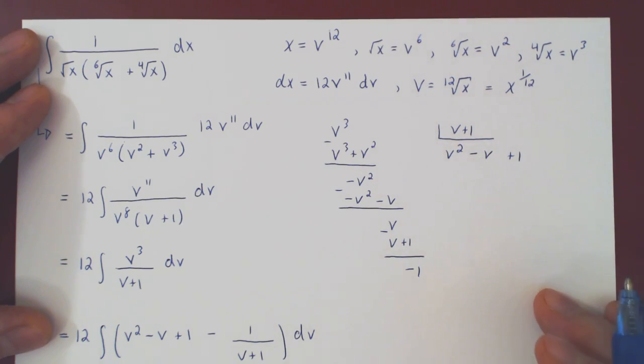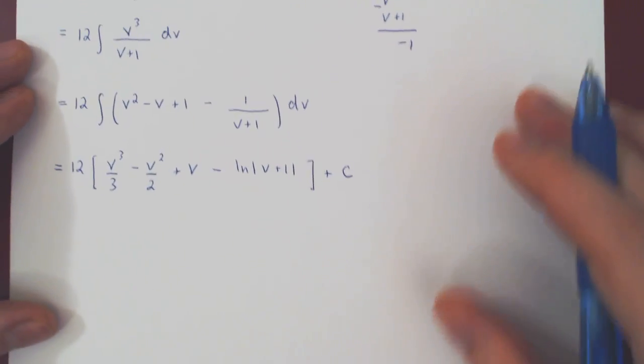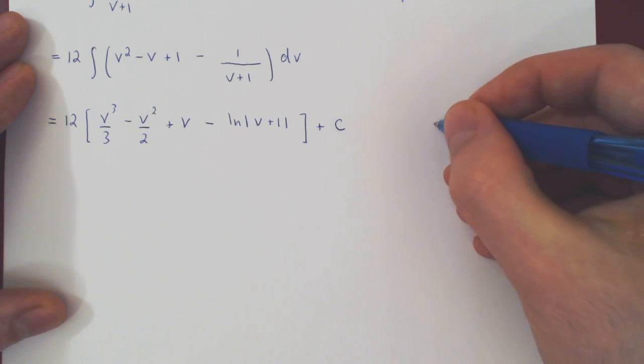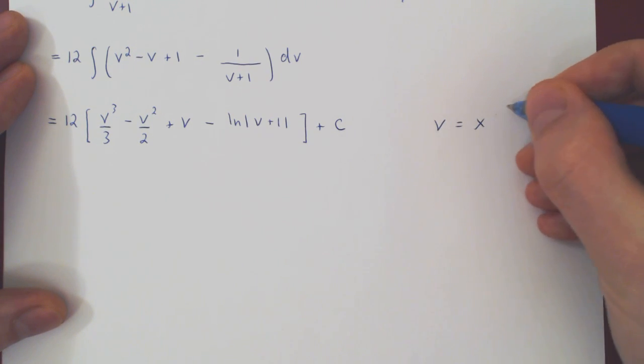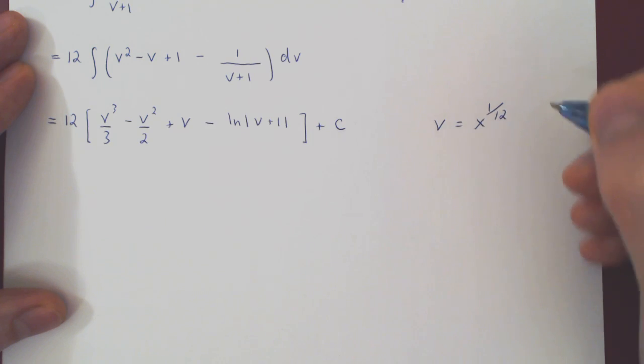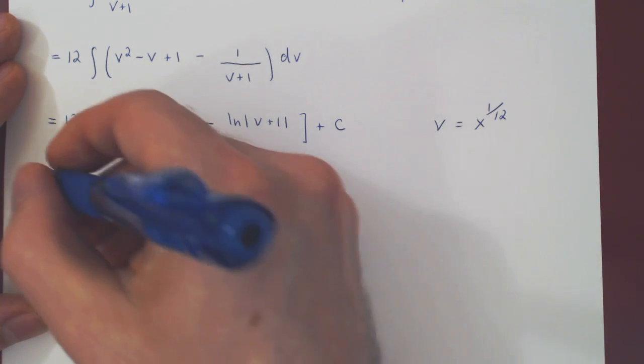So I'll use this form. So v is x to the power of 1 over 12. And then we can make our substitution.